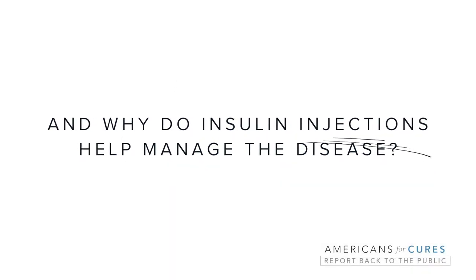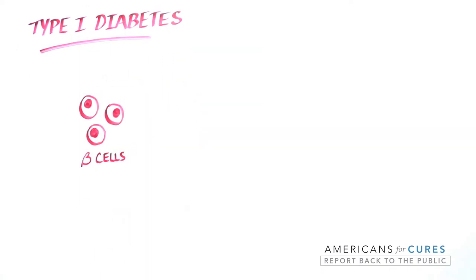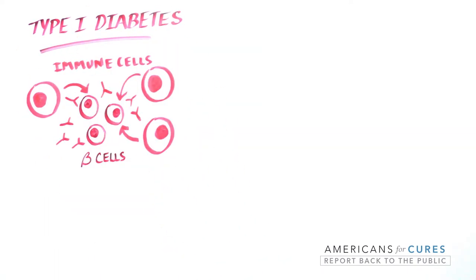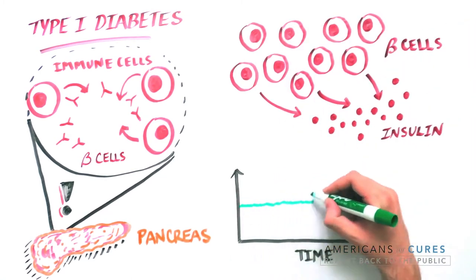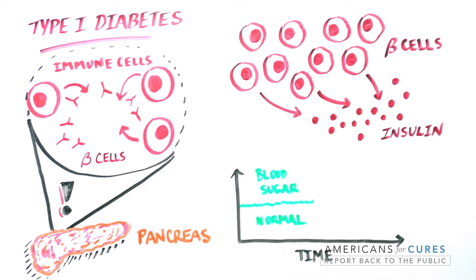What causes type 1 diabetes and why do insulin injections help manage the disease? Type 1 diabetes arises when a person's own immune system mistakenly kills beta cells in the pancreas. Beta cells normally produce insulin in a highly regulated manner to control blood sugar levels.